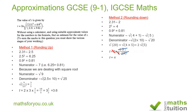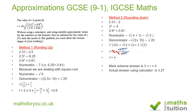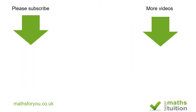So t is approximately equal to pi. The mark scheme says t must have a value between 3 and 4 — so greater than 3 and less than 4. If you do this by calculator, you get t equal to 3.27, so both methods get us as close as possible. I do hope that made some sense. Please subscribe, thank you for watching, and goodbye!